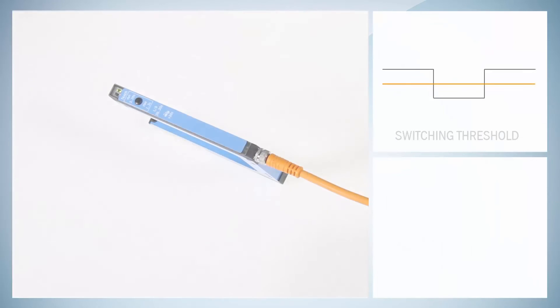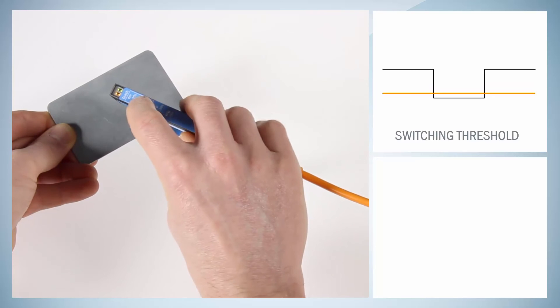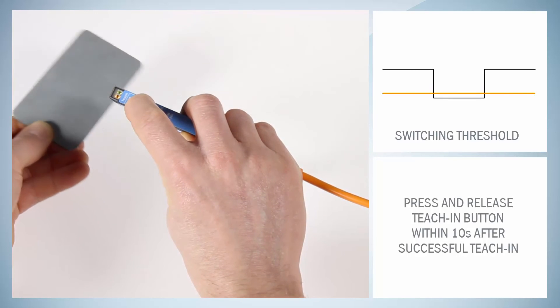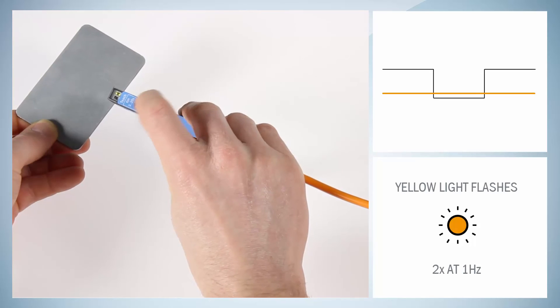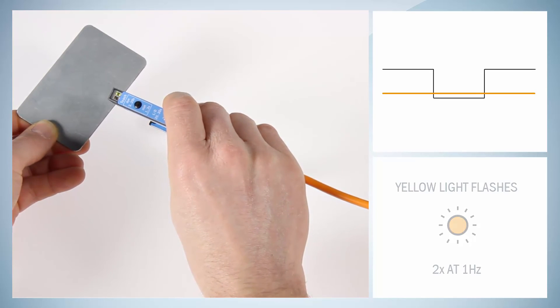Fine adjustment: In order to obtain a higher operating reserve, a fine adjustment can be carried out after successful Teach-In. For this purpose, the switching threshold is set close to the taught-in background. The Teach-In button must be pressed and released within 10 seconds after the successful Teach-In. Successful setting is indicated by flashing twice at 1 hertz.